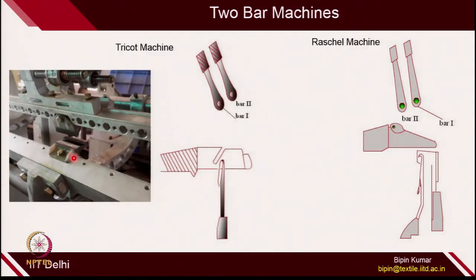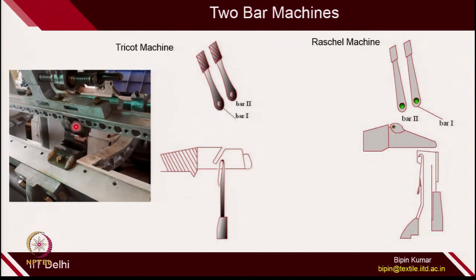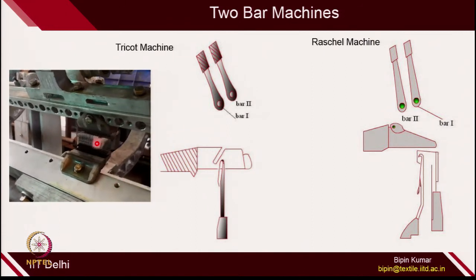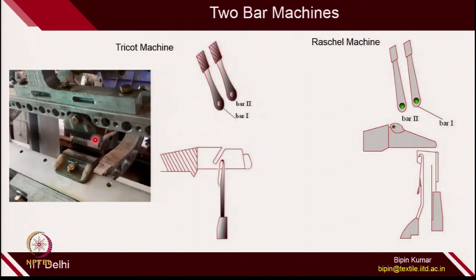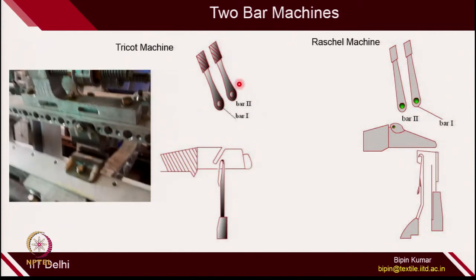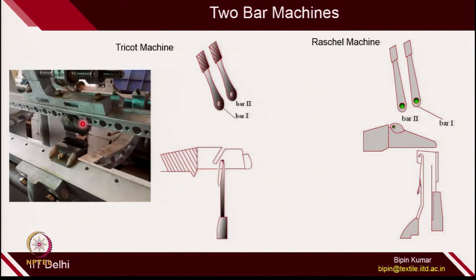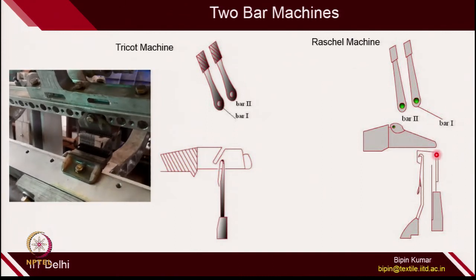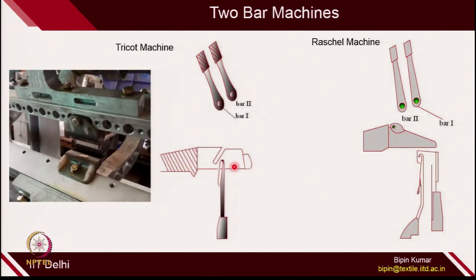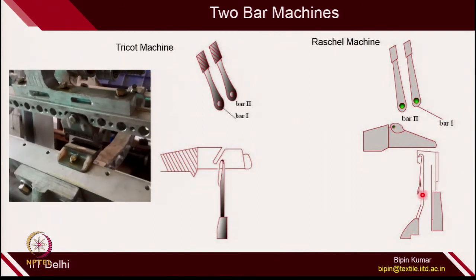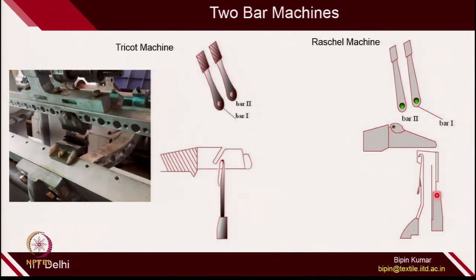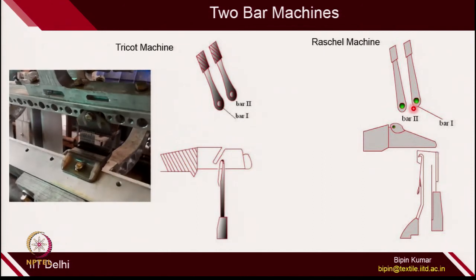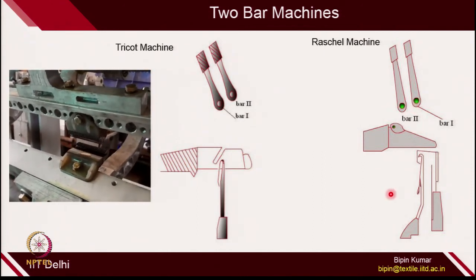In the tricot machine video, if you look carefully, there are 2 guides — one is visible and another is at the back side. The needle is rising, and there are 2 guides attached on top: bar 1 is visible to you, and bar 2 is at the back side of bar 1. Similarly, in the Raschel machine, the role of sinker is not as prominent because there is a verge on the needle bed itself, so pulling of fabric is very easy. In the Raschel machine also, we can have 2 guide bars providing yarn to the individual needles.